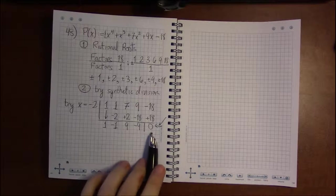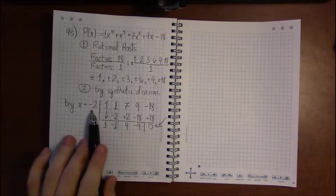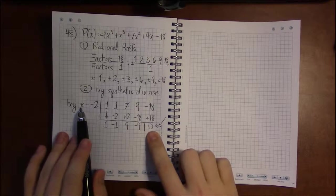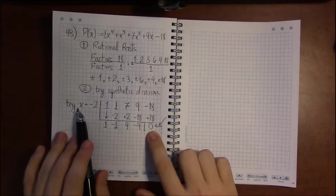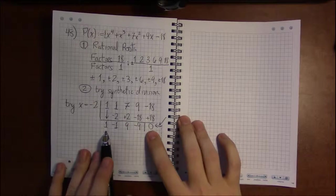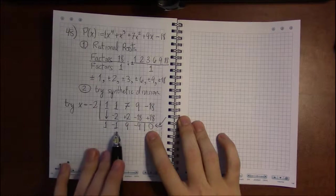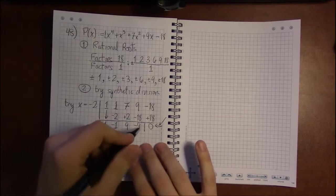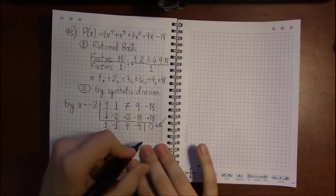I found that x equals minus 2 is a 0 of this polynomial. But I'm not at the stopping point yet. I don't have 1, 2, 3 numbers and a 0. I've got 4 numbers here, so I'm going to continue from right here.